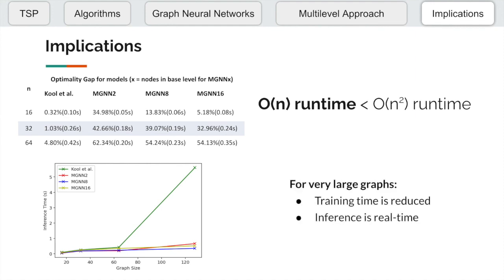Overall, our model is able to reduce training times for large graphs and provide more real-time inference speeds. This was a summary of our multi-level graph neural network for solving the traveling salesman problem. Thanks for watching!